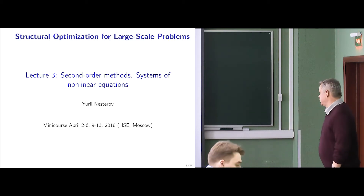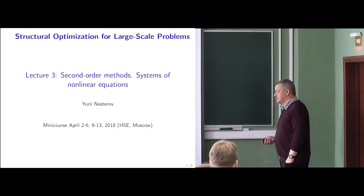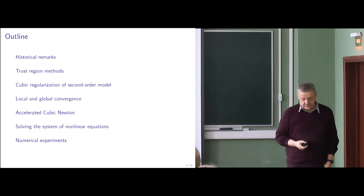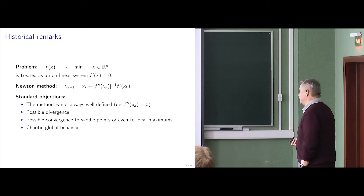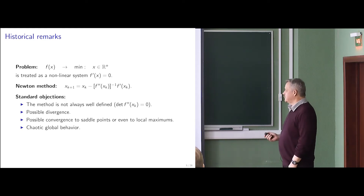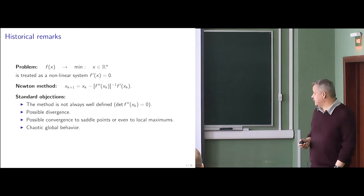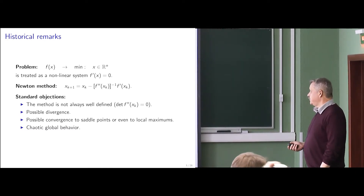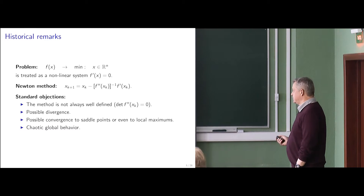Good morning. Let us start our third topic, which is about second-order methods. We will discuss how they should be designed and what theory we can build around them to justify the efficiency estimate and the rate of convergence. First, let me start with some historical remarks. We are speaking about the simplest unconstrained minimization problem — we minimize a nonlinear function without constraints. We treat this problem as solving the first-order optimality condition, which is that the gradient is equal to zero.